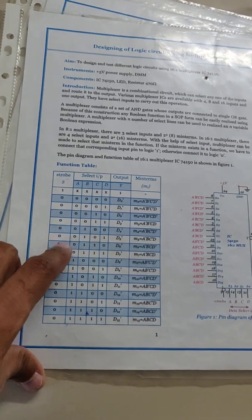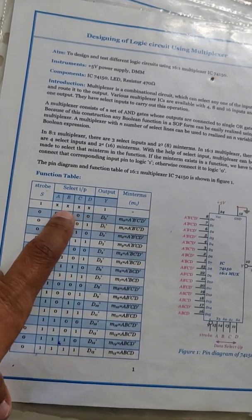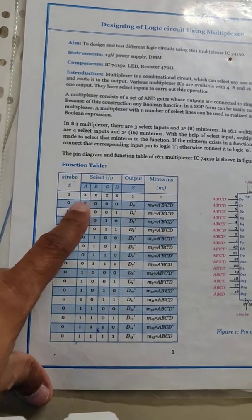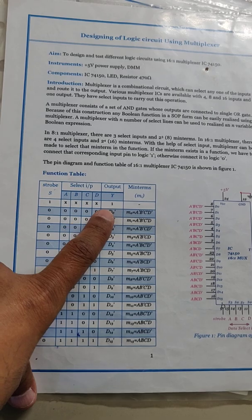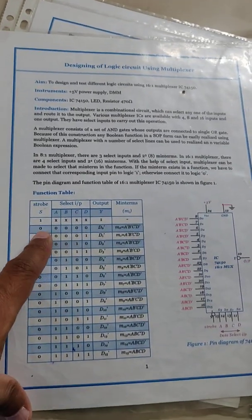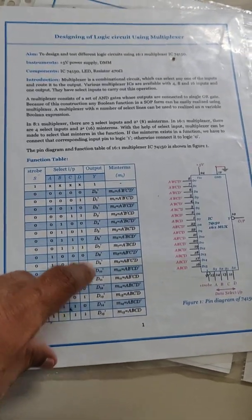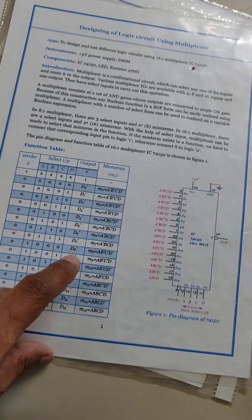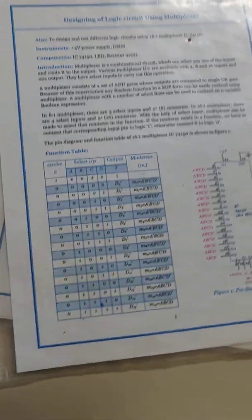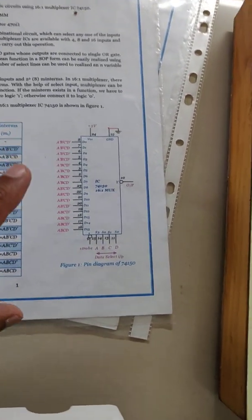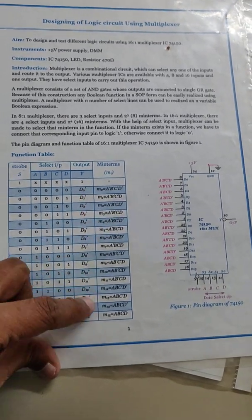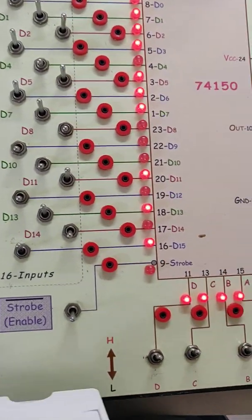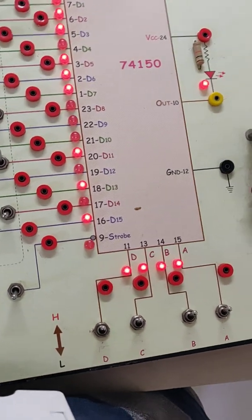You have to verify the truth table starting from 0000. When the strobe signal is high, whatever input may be there, the output is not responding and it remains stuck at a high state. When the strobe signal is low, it responds, and depending upon the decimal equivalent of ABCD, the corresponding data input Dn is steered at the output, and the output is complemented. This is the first part of the multiplexer experiment you have to verify.